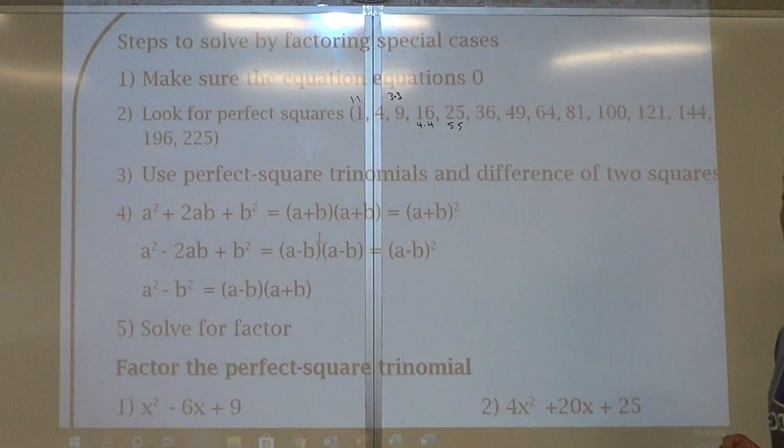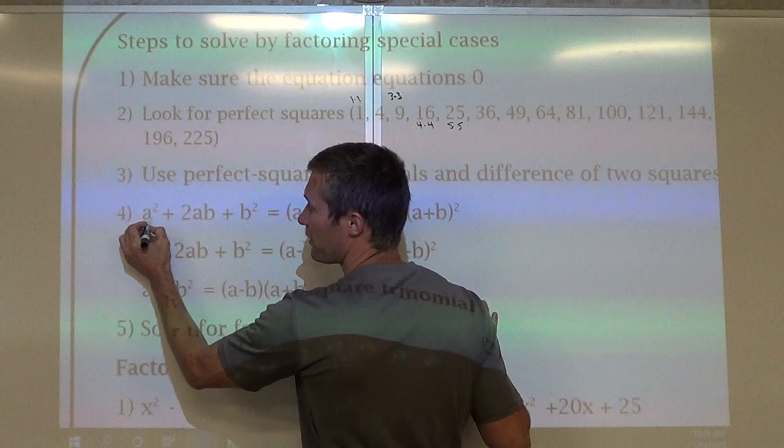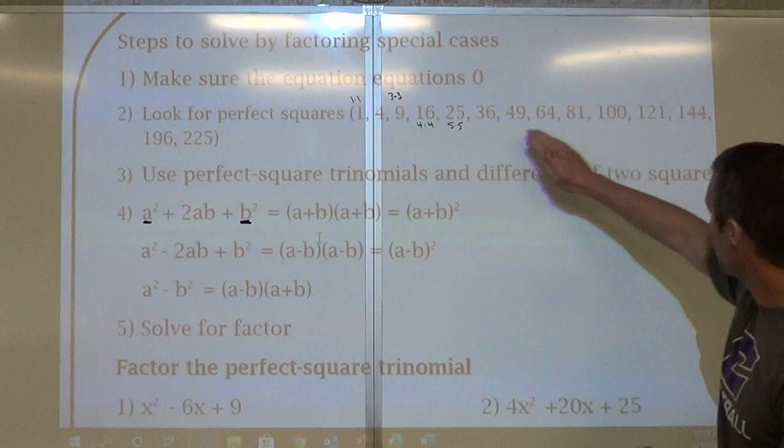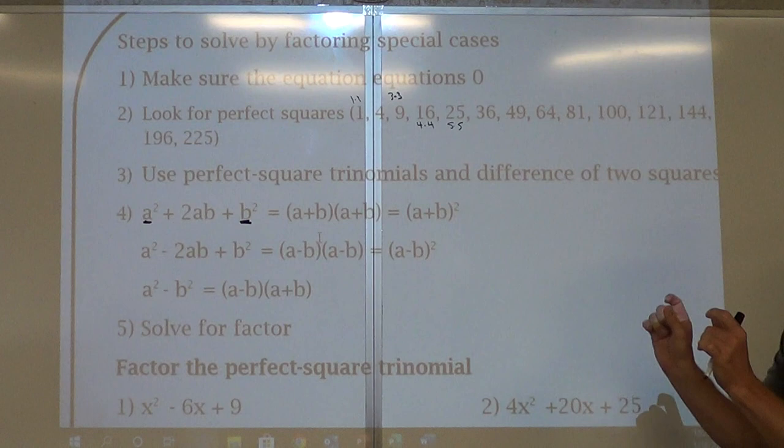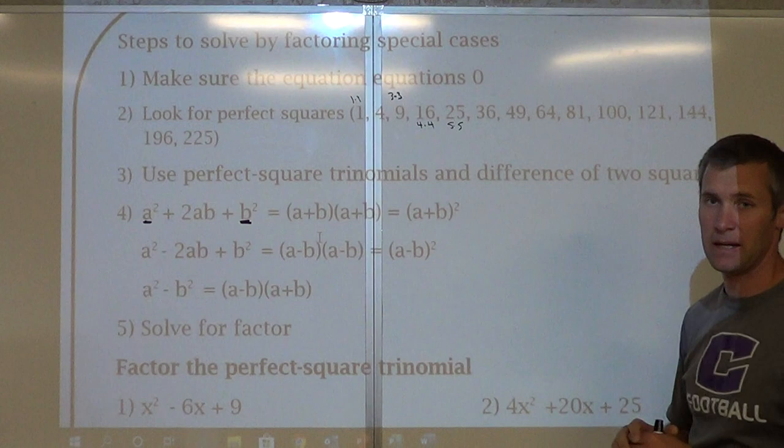We're going to try to find where there's a perfect square in the first term and the last term. Do I see any of these types of numbers in the first one and the last one? If we do, then we'll factor them out, put them in perfect squares. So 16 will break into 4 and 4, and then we're going to see if that middle term follows.